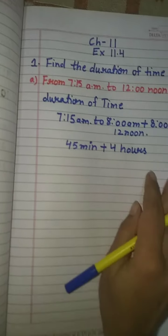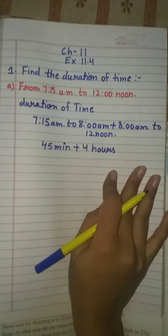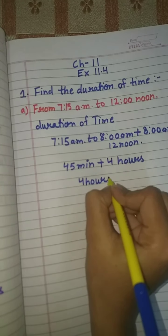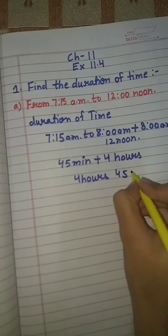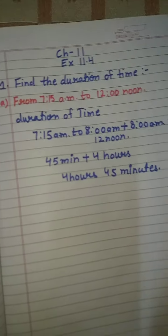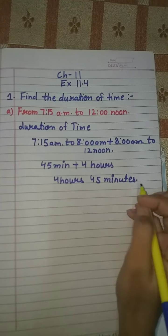8, 9, 10, 11, 12 - it's 4 hours. What is the duration of time? We will find 4 hours 45 minutes. That's your answer one.